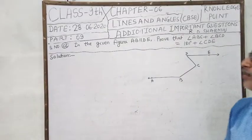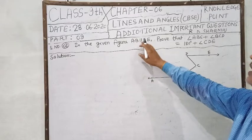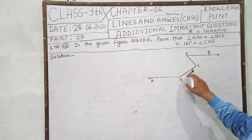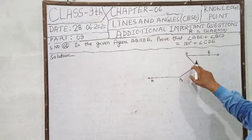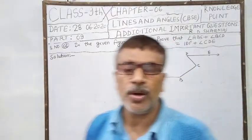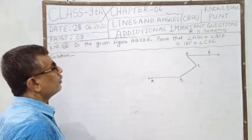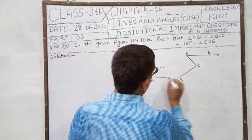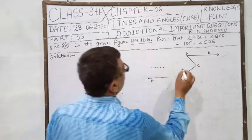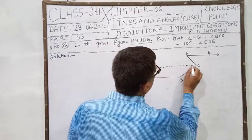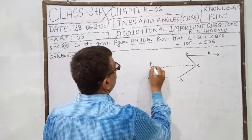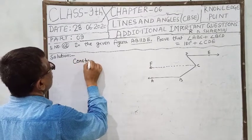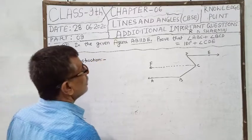Question number 2: In the given figure AB parallel DE, prove that angle ABC plus angle BCD is equal to 180 degrees plus angle CDE. First of all, we use some axiom. And before this, we have to draw a line. AB and DE are parallel. So construction: draw a line CF parallel to AB.